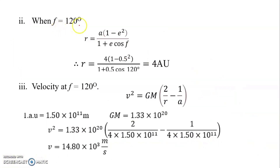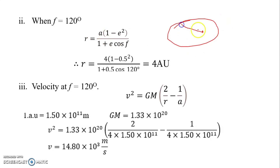Now for f = 120°. We want to find the distance of the asteroid from the Sun. There is a Sun at the focus, with the orbit around it. At a true anomaly of 120°, we use the orbit equation to find the distance from the Sun.